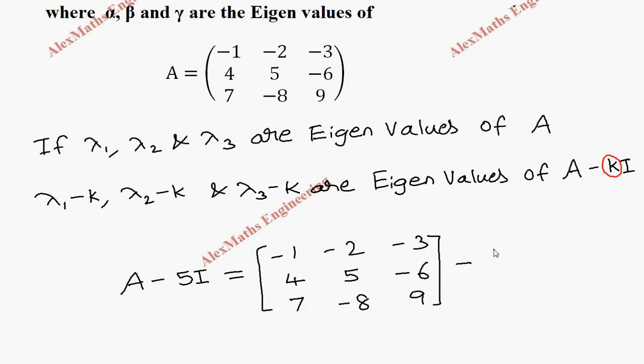Minus 5I is the identity matrix: 1, 0, 0, 0, 1, 0, 0, 0, 1, multiplied by 5.